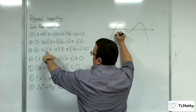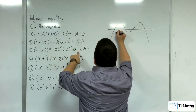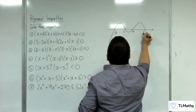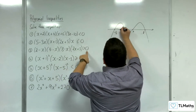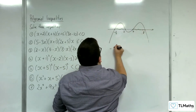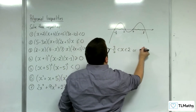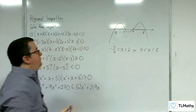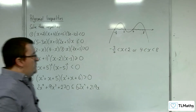So we've got critical values at 2, 4, 8, and minus 3 sevenths. Ordering: minus 3 sevenths, 2, 4, and 8. Where is the graph above the x-axis? It's in two regions: x is greater than minus 3 sevenths but less than 2, or greater than 4 but less than 8. That's the answer to number 3.